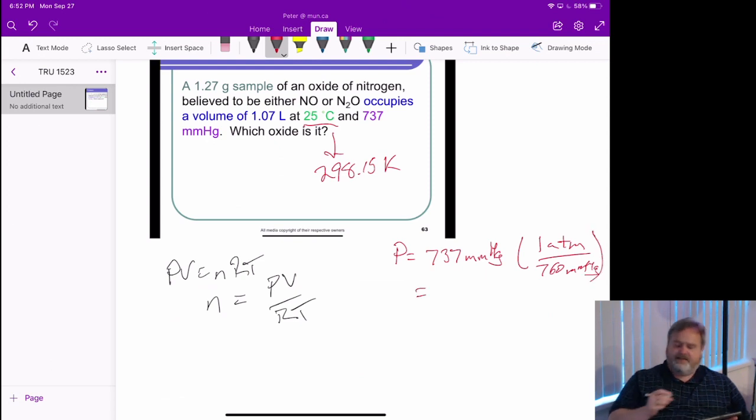So I can actually express this through my conversion factor in atmospheres, and that's going to then decide which value of R I'm going to use. I have to make sure I use a value of R that has units consistent with the pressure units that I'm looking for. So here I am, 737 divided by 760.